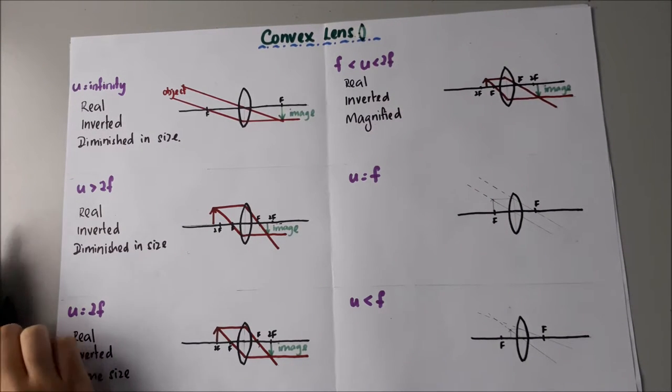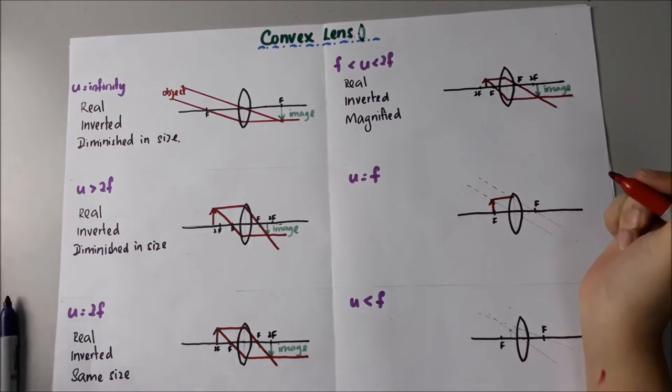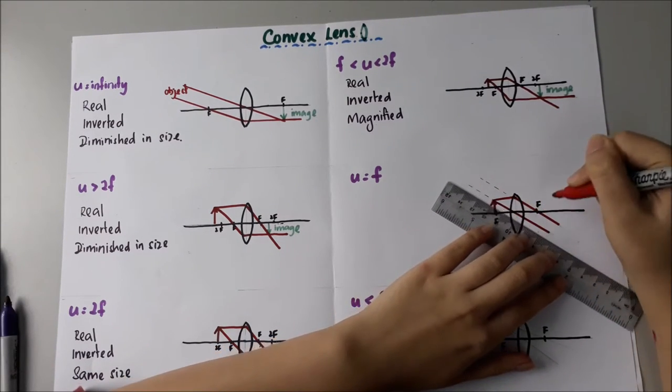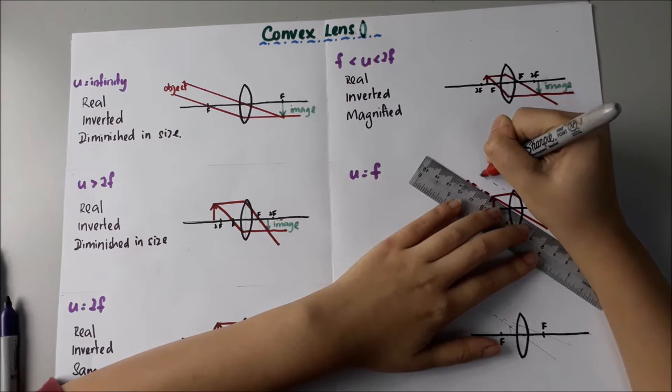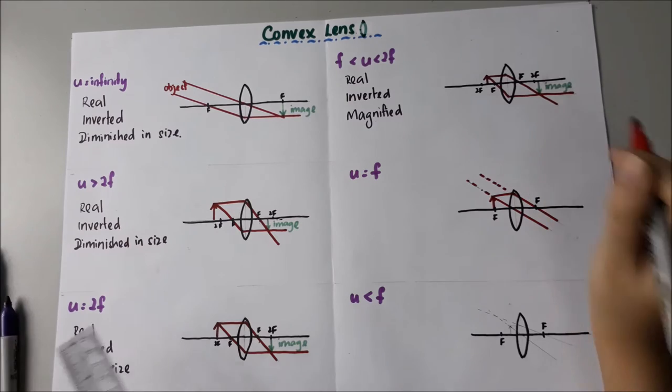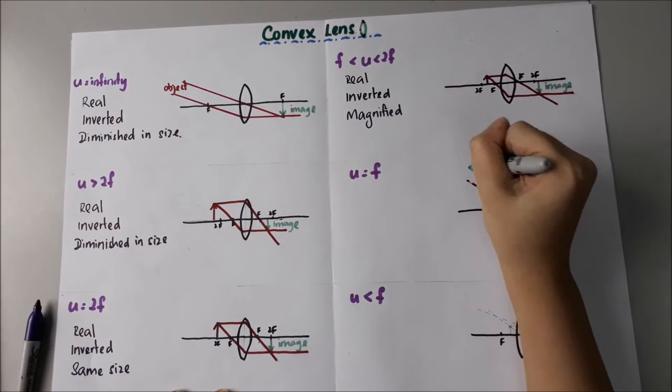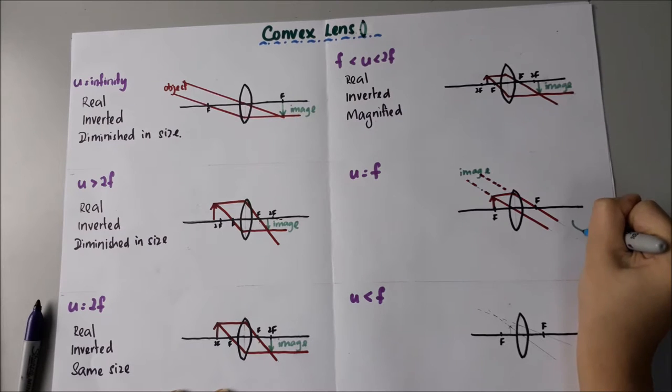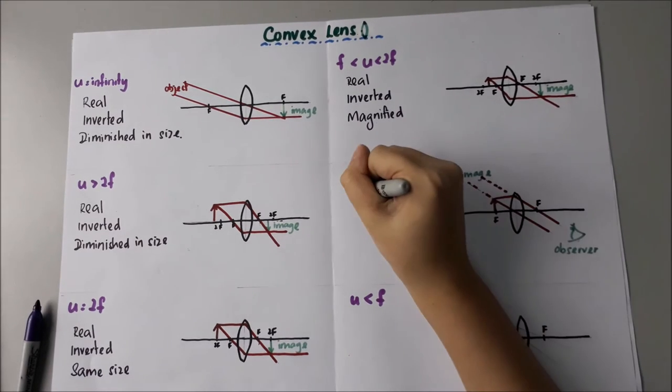Now, if the object is at F... The image is at infinity from the observer's eyes. So... Now, the image is...